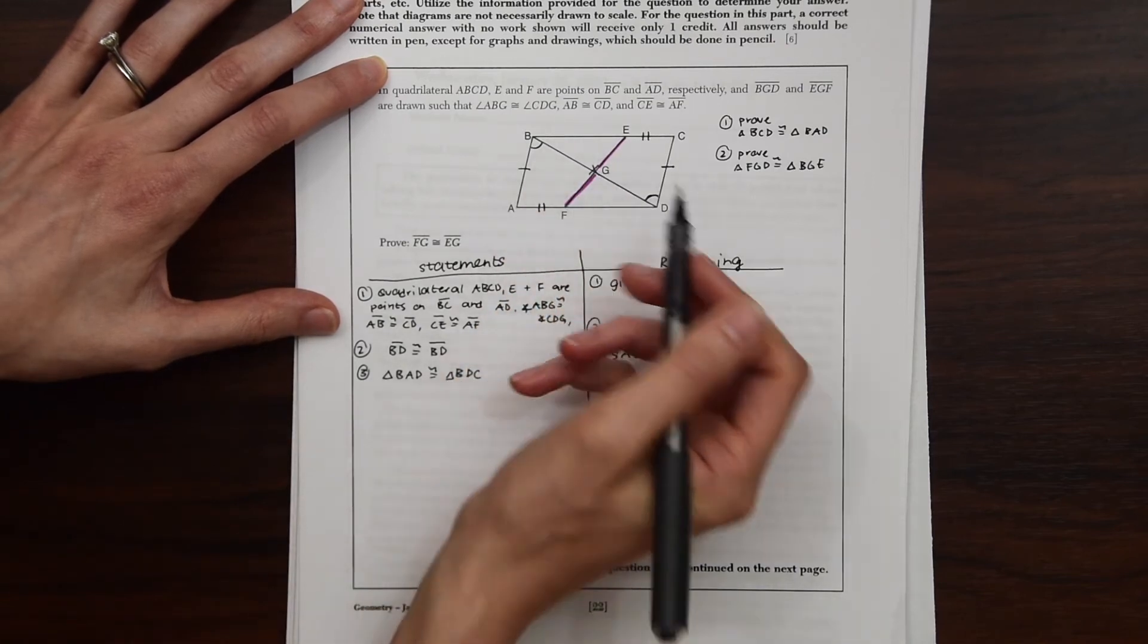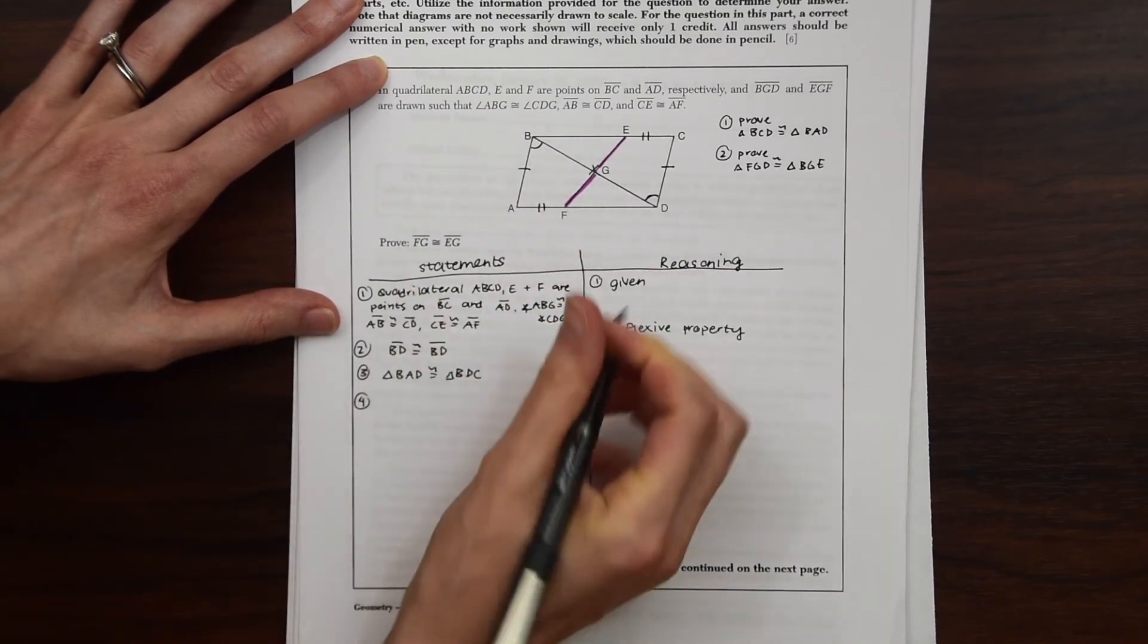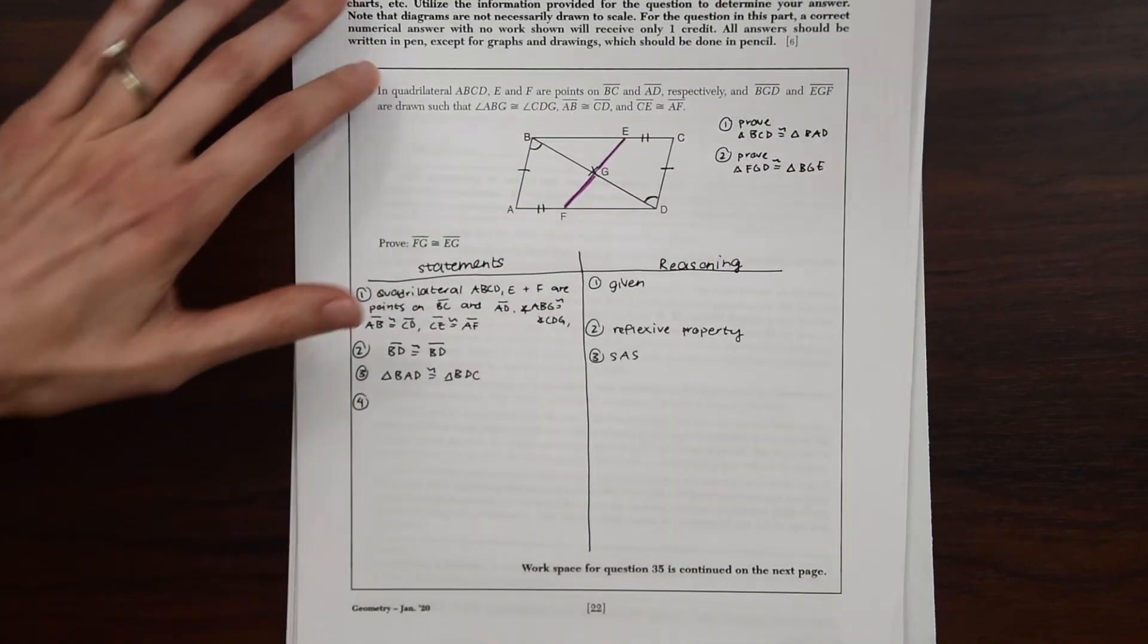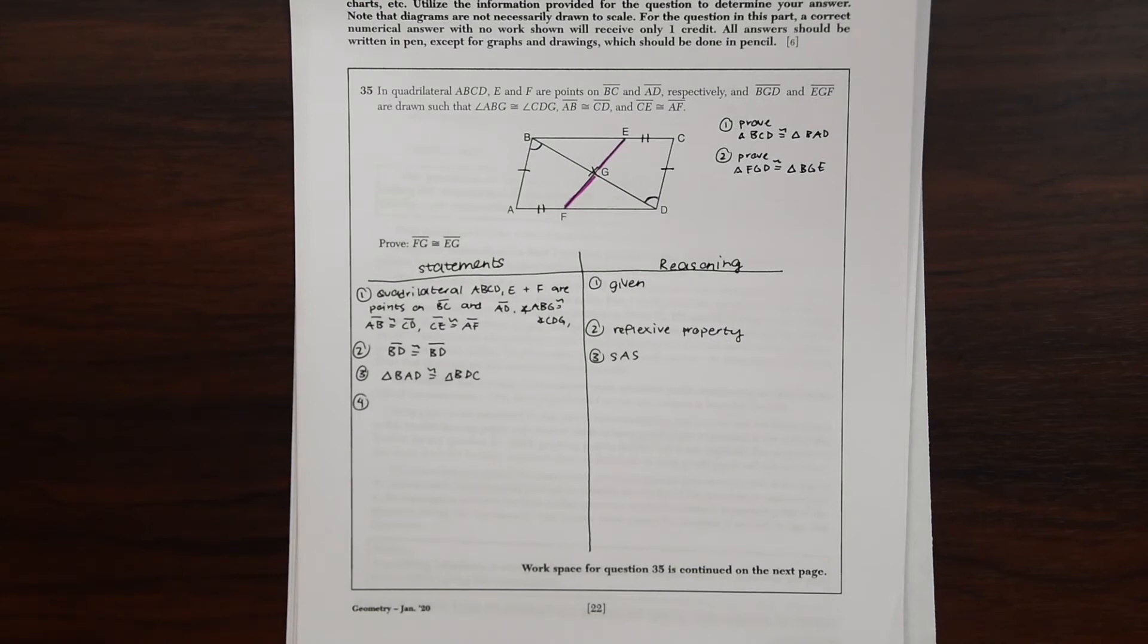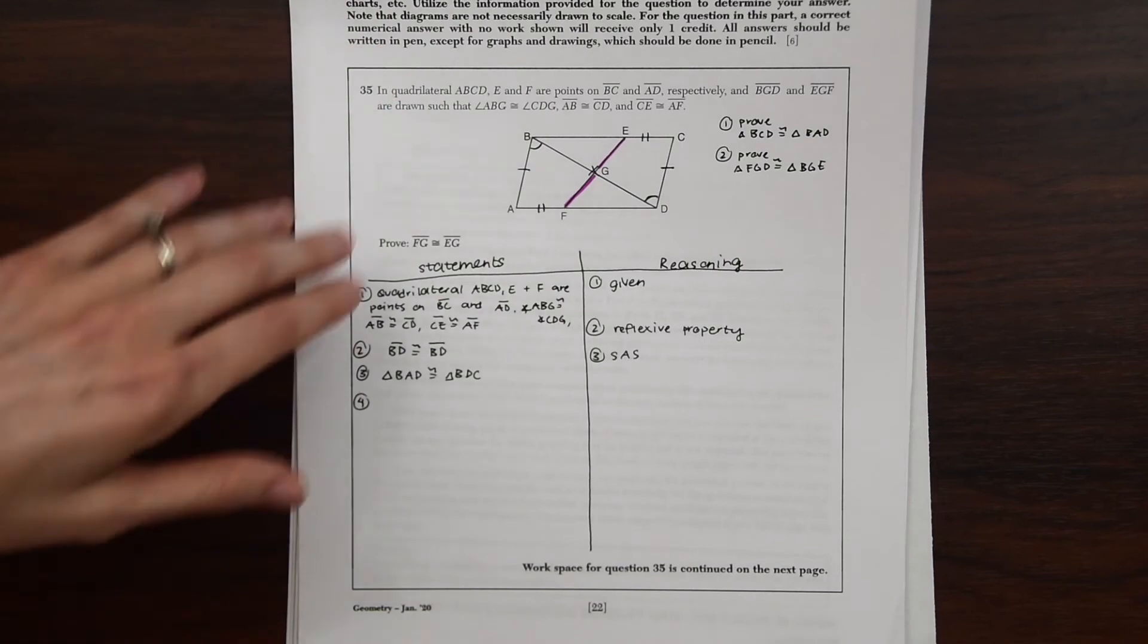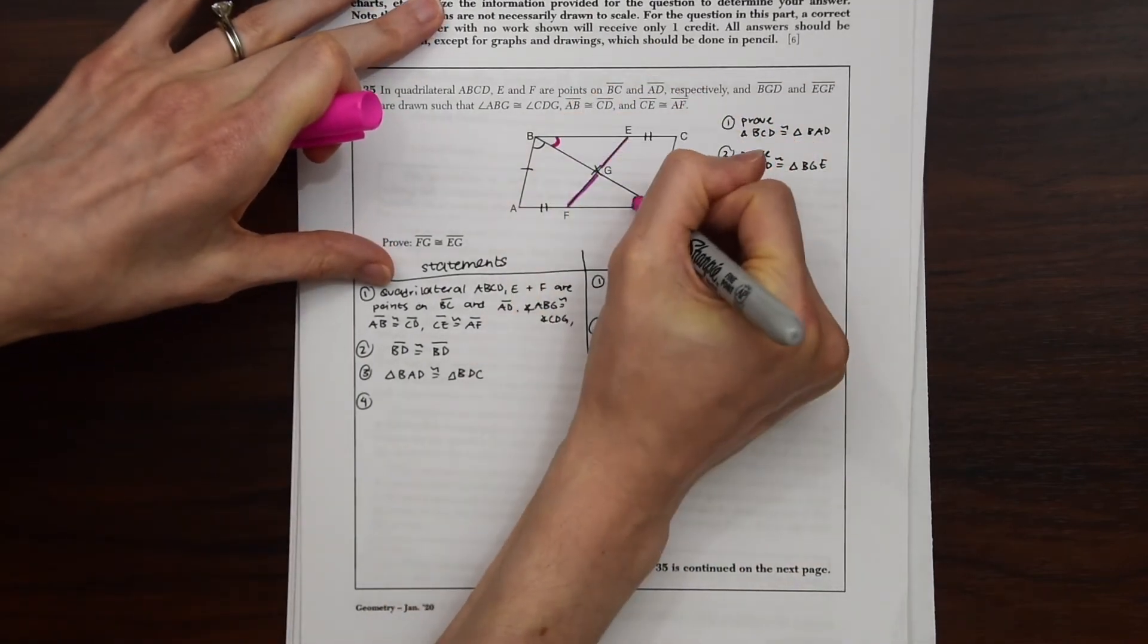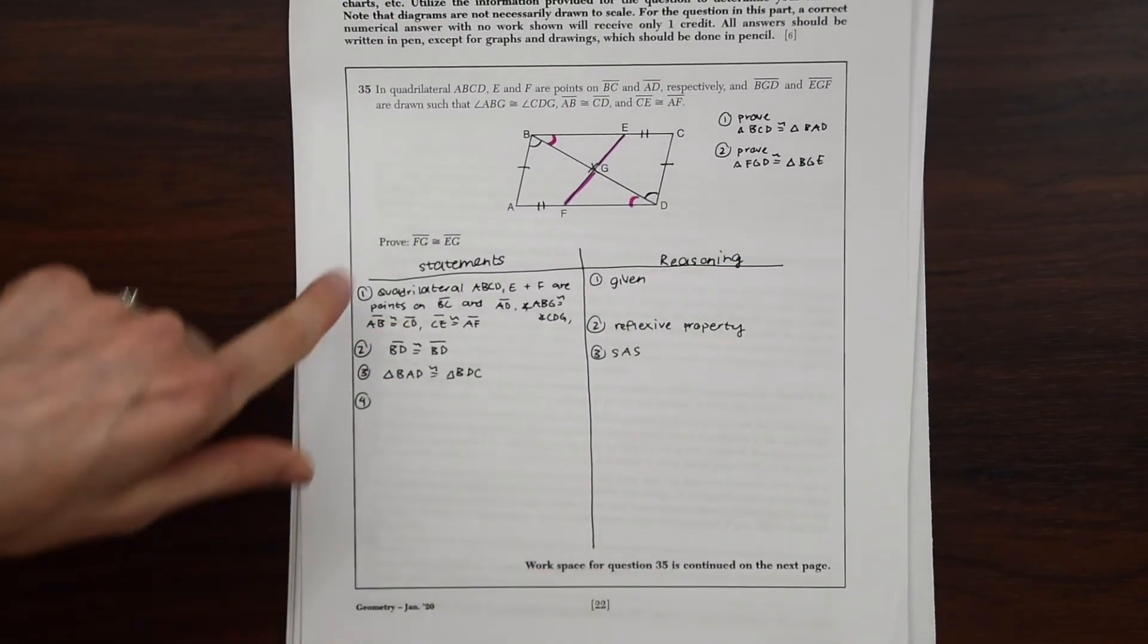So now we can start looking at our other triangles and try to prove those congruent. So now we want to focus on these little triangles, B, E, G, and F, G, D. So what are some things we can say about that? If you notice, we can say that these two angles are congruent to each other based on CPCTC of the other triangles we just proved congruent.